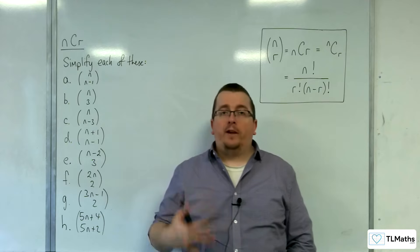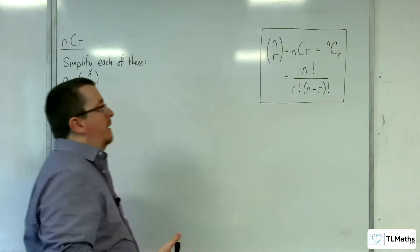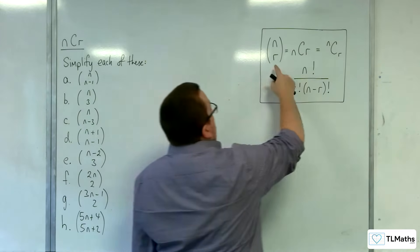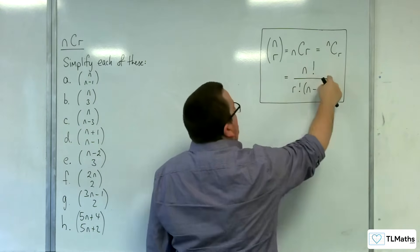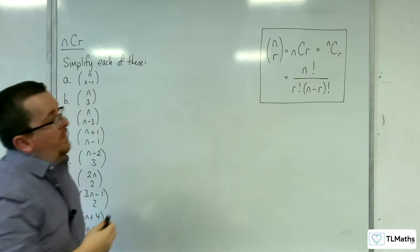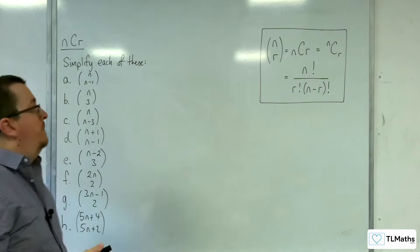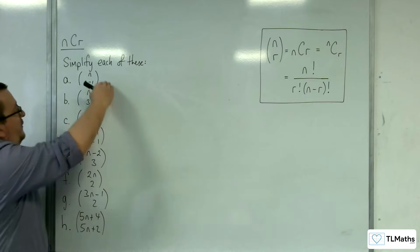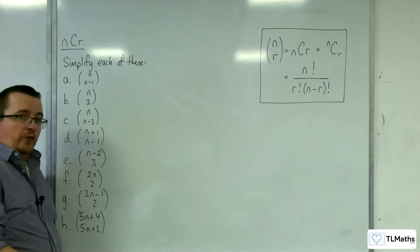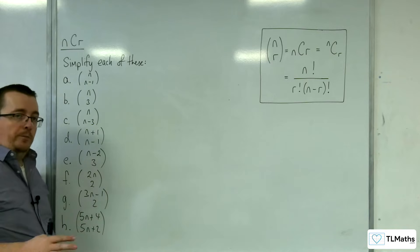In this section, we're going to be looking at algebra problems that involve the NCR function. NCR has a few different notations. This is the formula, and you're given this in the formula booklet, and you need to be able to use it. What we're going to do is simplify each of these into an algebraic expression, without any factorials being involved.